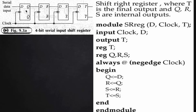The intermediate outputs — q from the first flip-flop, r from the second, and s from the third — are also intermediate results. These must all be declared as register type variables, not wire type, because they represent outputs from intermediate flip-flops.